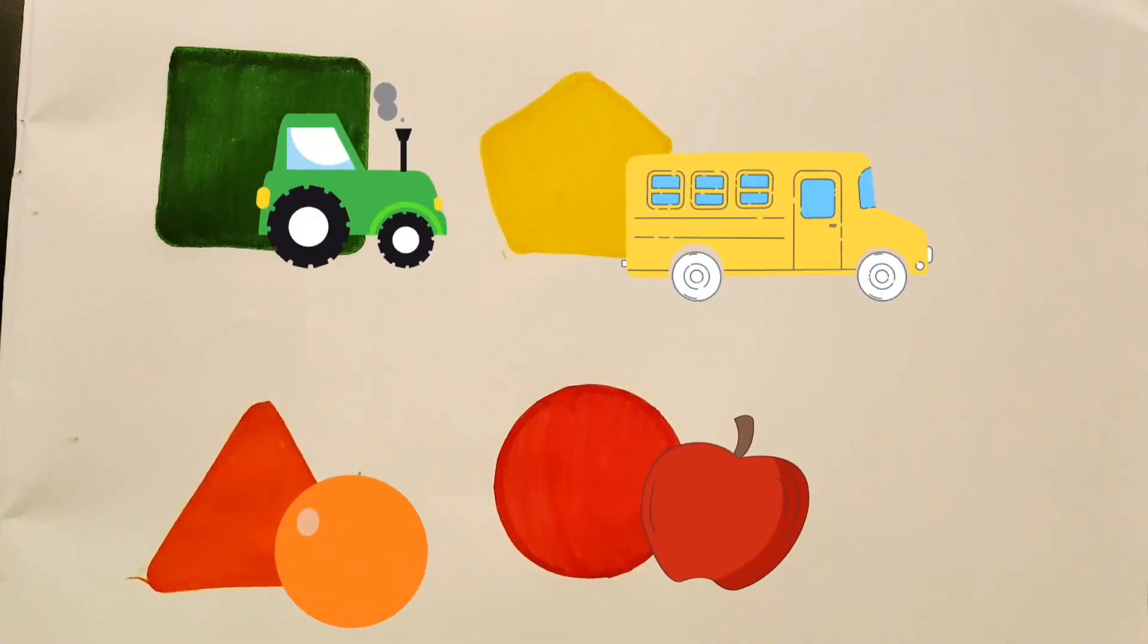And we will see what comes in the red color. So now we have green color square, yellow color pentagon, orange color triangle, and red color circle.